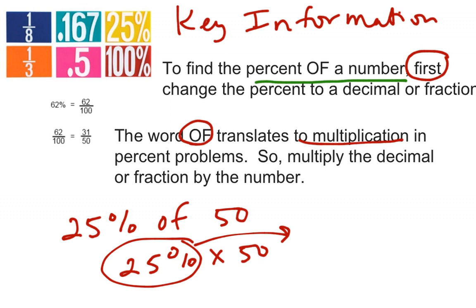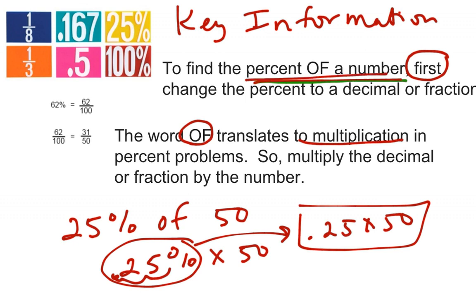So we know how to do a decimal. We just move the decimal place 2 to the left, so 0.25 times 50. So that would be how you set up your multiplication problem if you were trying to find the percent of a number.